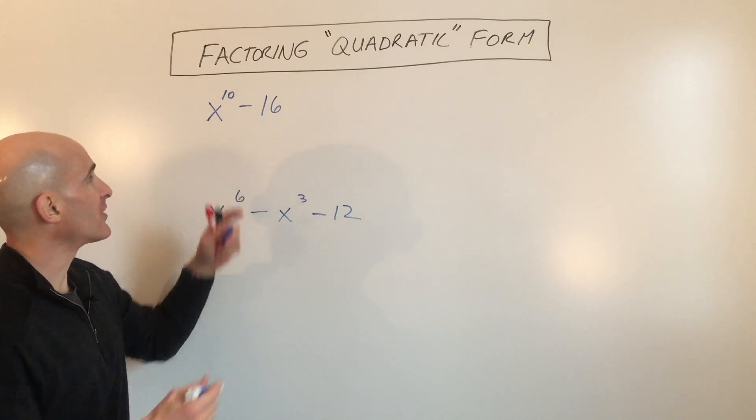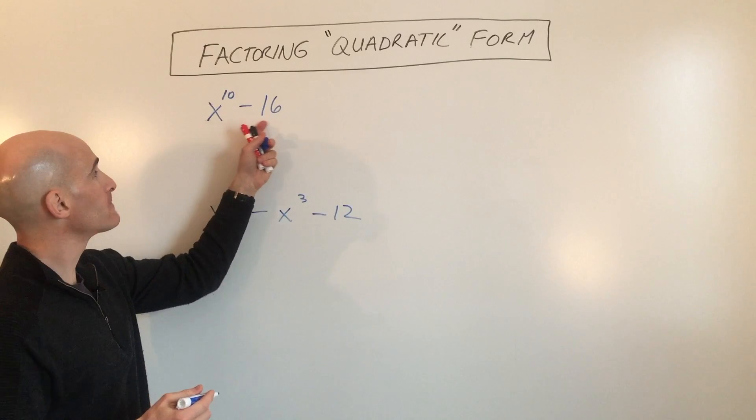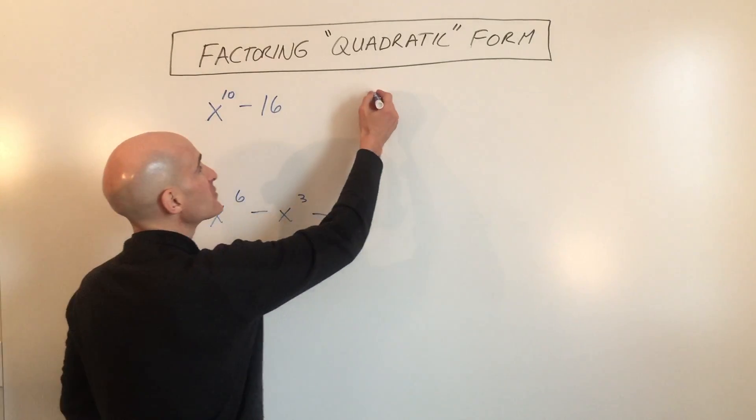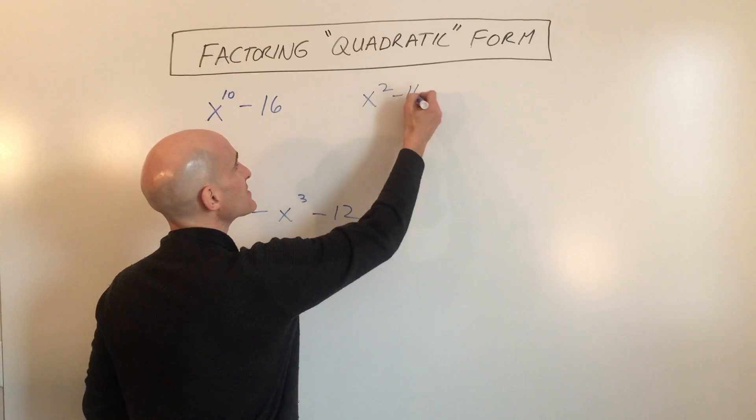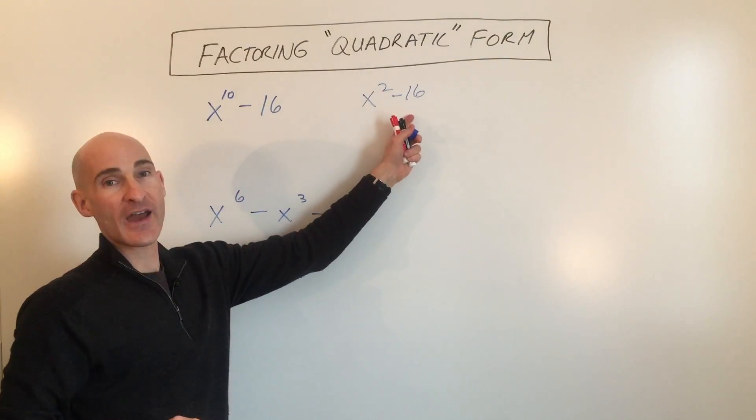And we're used to factoring, like if you would look at this first example, x to the 10th minus 16, if this was x squared minus 16, we'd have no problem factoring it.